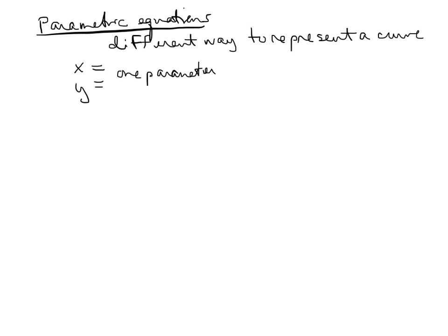So one parameter, one variable — t is used a lot. You'll see x equals and it'll have some function of t, or y equals and it'll have some function of t.